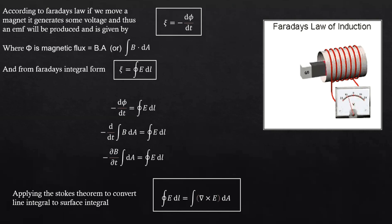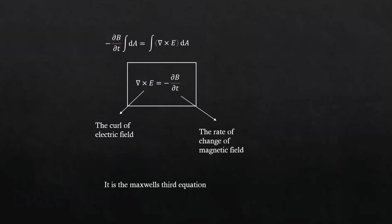By applying the surface integral to the above equation, we get minus ∂/∂t integral B·dA equals integral (∇×E)·dA. Therefore, we get the final equation as ∇×E equals minus ∂B/∂t, where ∇×E is the curl of electric field which equals the negative rate of change of magnetic field. This is Maxwell's third equation.